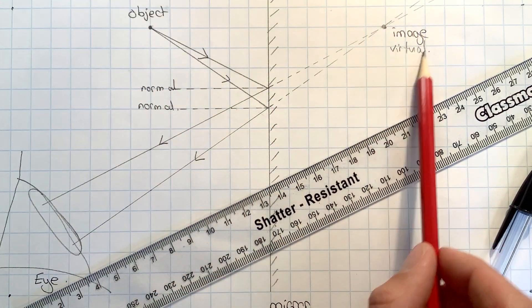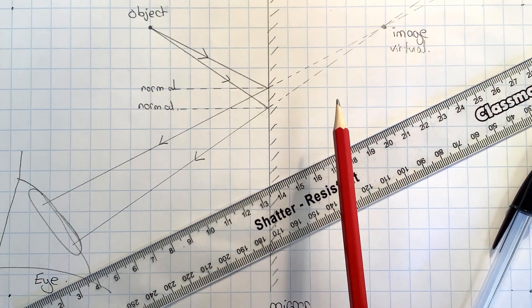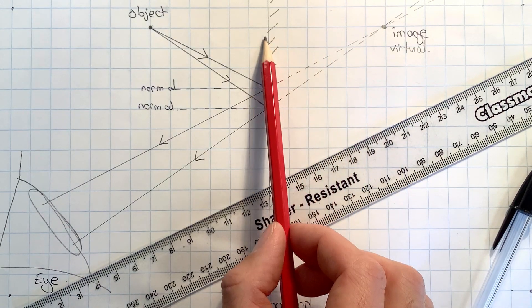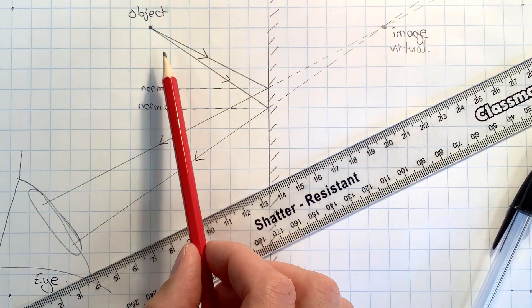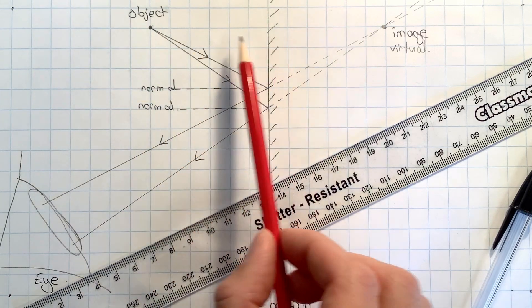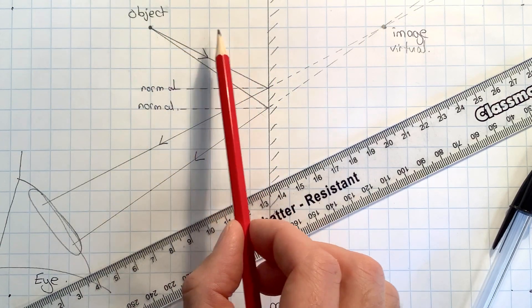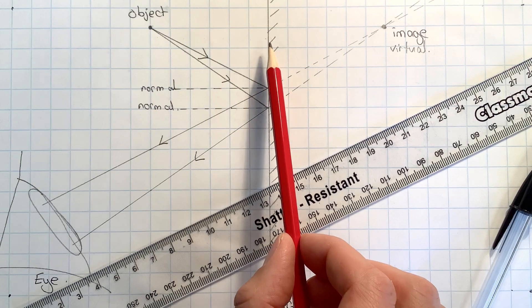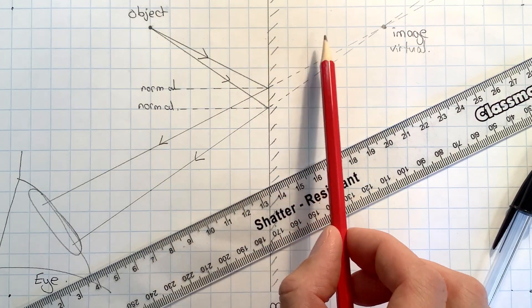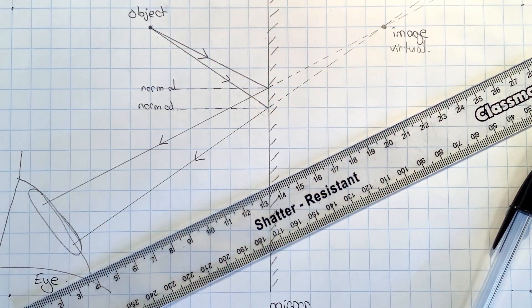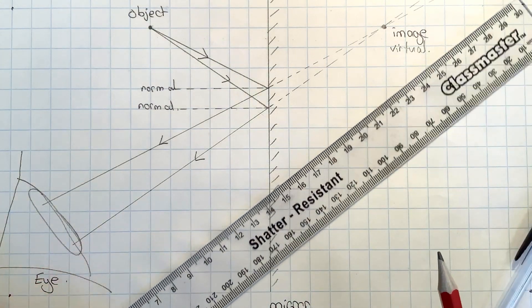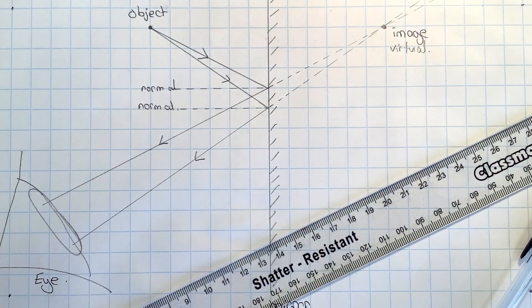We can check this: the object is six squares in front and the image is six squares behind. So there we have our ray diagram for the image formed by a plane mirror.